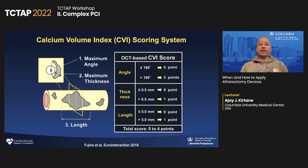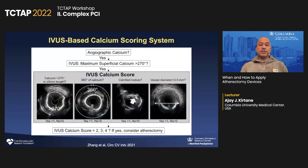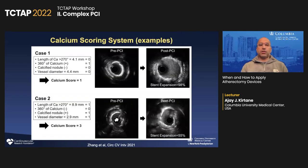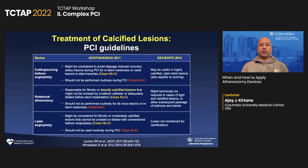How can we predict that we'll get a fracture with conventional techniques? There are scoring systems. This is an OCT-based scoring system looking at angle, calcification thickness, and length. More recently, an IVUS-based scoring system looks at length, circumferentiality of calcium, nodule presence, and vessel size. Essentially, if you have more bad predictors, you typically need to use a plaque modification strategy such as atherectomy in order to achieve a fracture and then stent expansion.